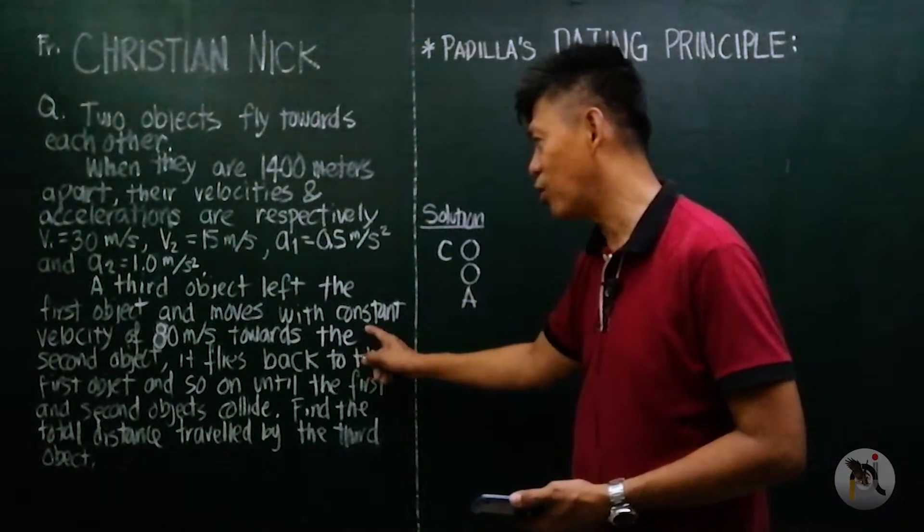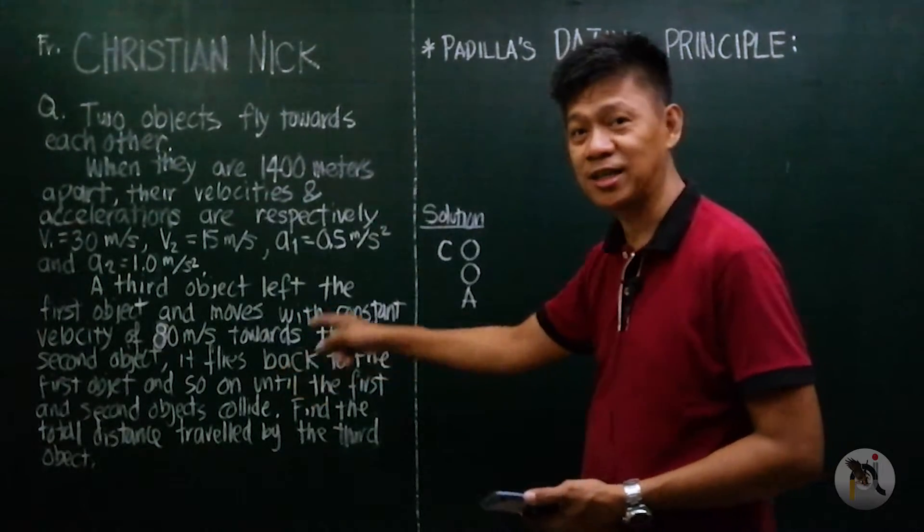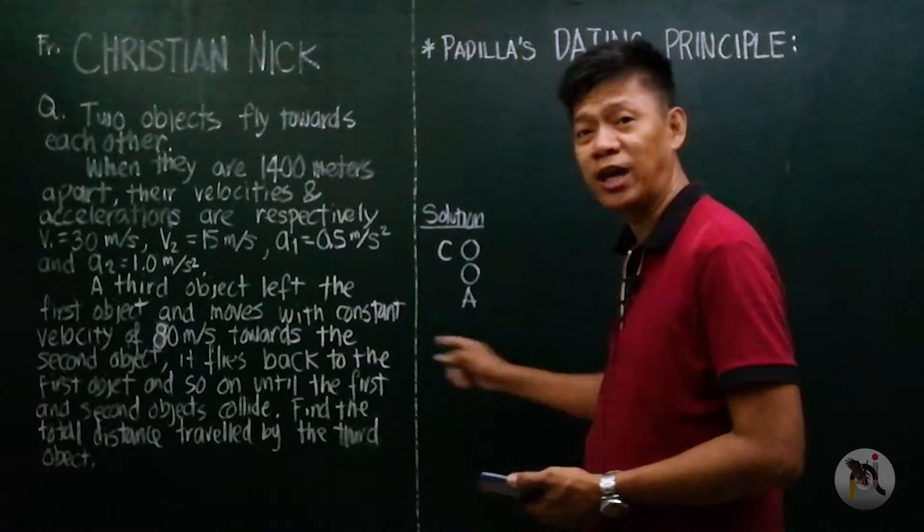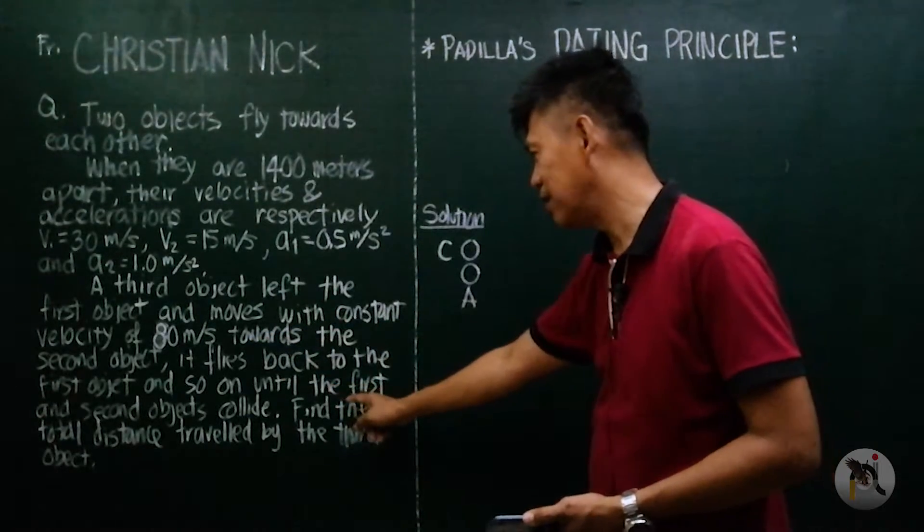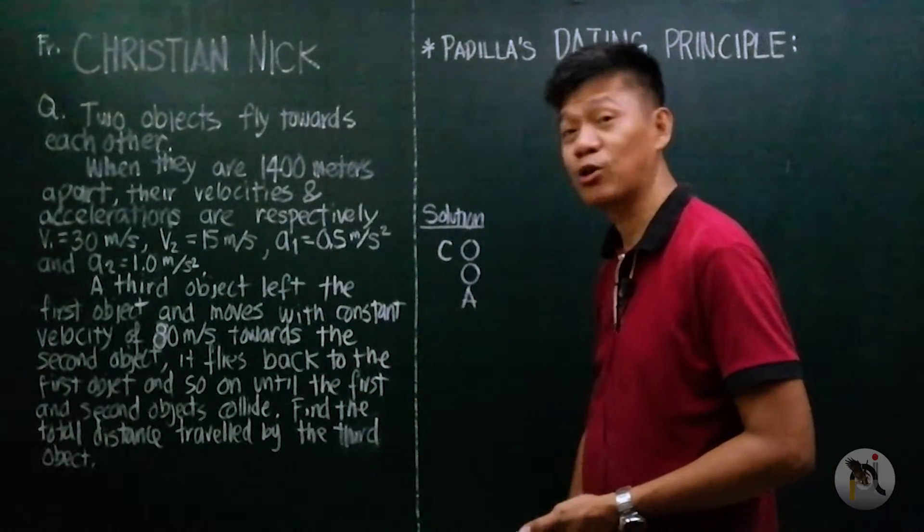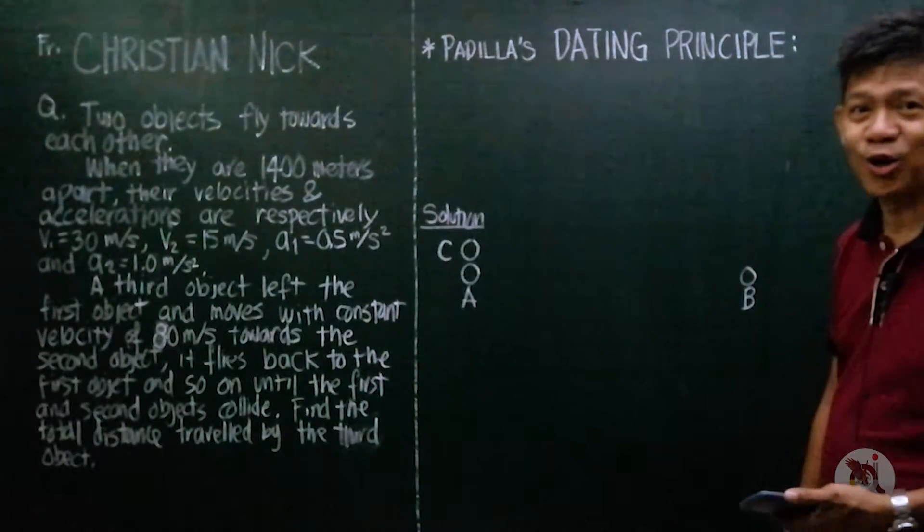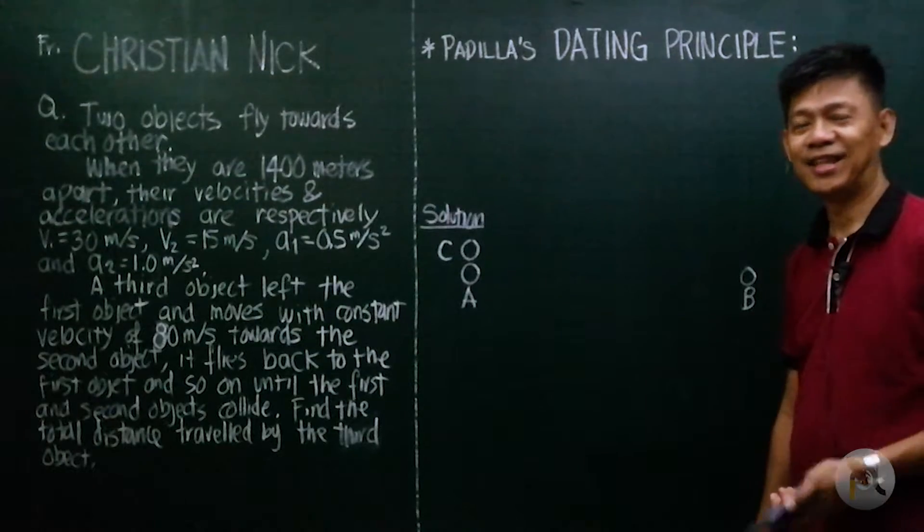The first object, the second object, then the first object again, then the second object again, to and fro, until the first and second objects collide. Find the total distance traveled by the third object.